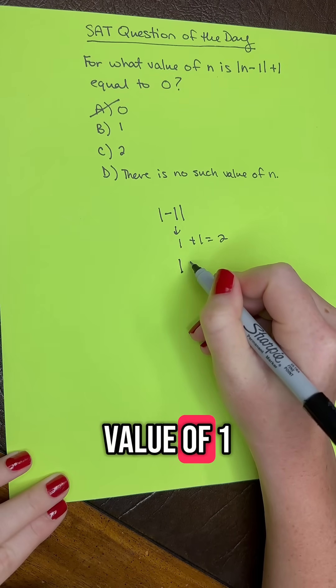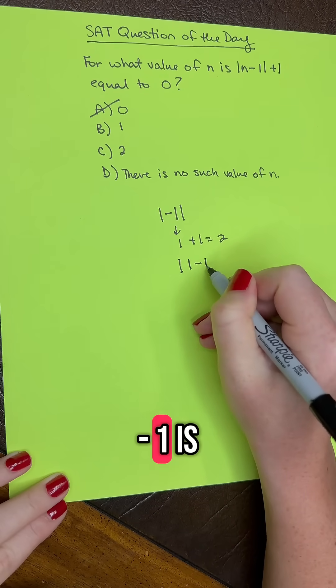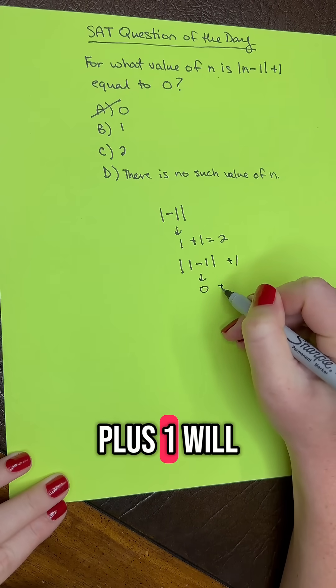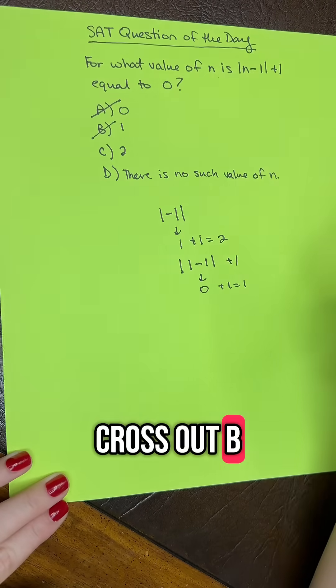Let's test B here. Absolute value of 1 minus 1 is going to give us 0 plus 1, which will give us 1. Cross out B.